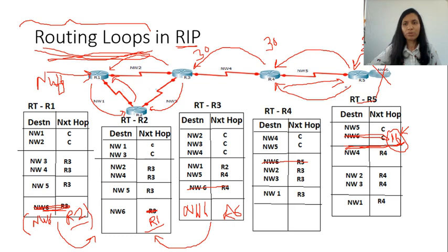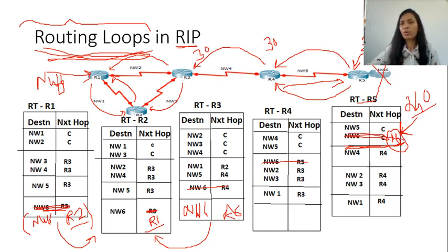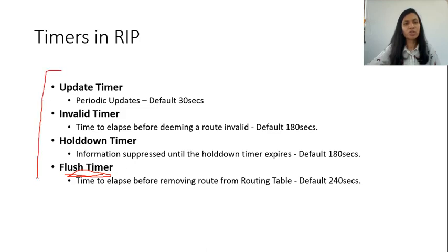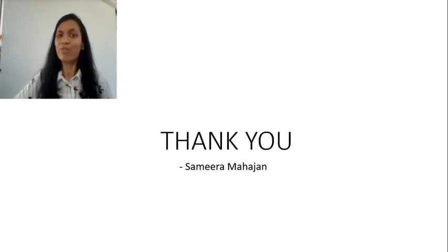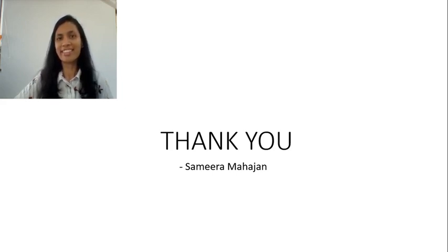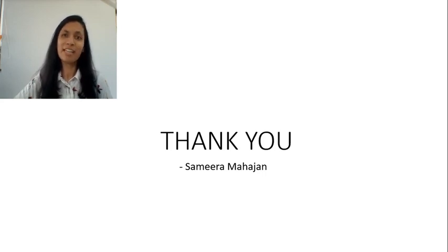When the router initially learns that network 6 cannot be reached, it poisons the route rather than removing it, and waits for 240 seconds — until the flush timer expires. If R5 does not receive any new information about network 6 within that time, it completely removes the route from its routing table. These are the different timers used in RIP. That is all for this session. Please watch the next video to understand configurations of RIP on routers using Packet Tracer. Thanks for watching — please leave your comments in the comment section, as it would help me create better videos for you.